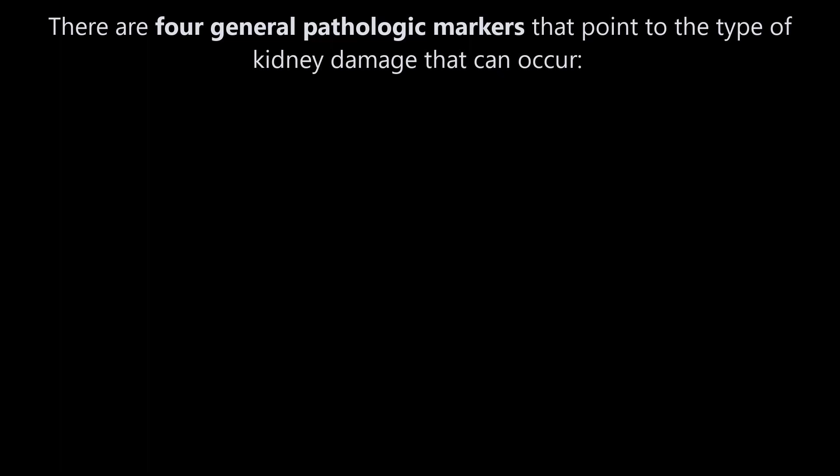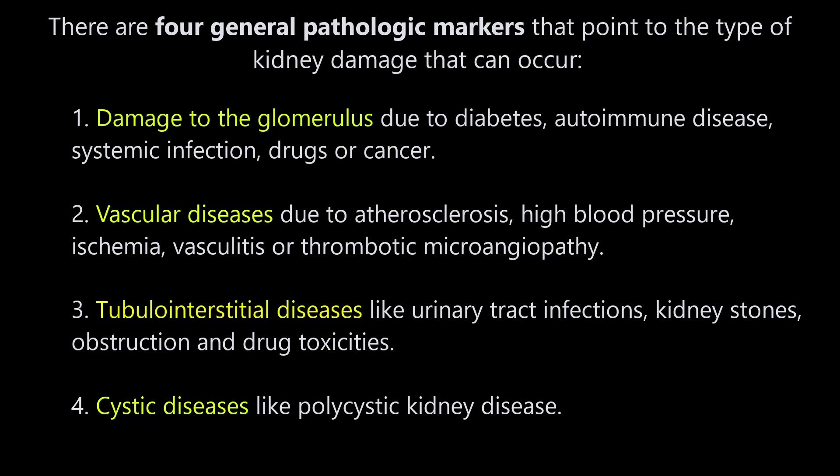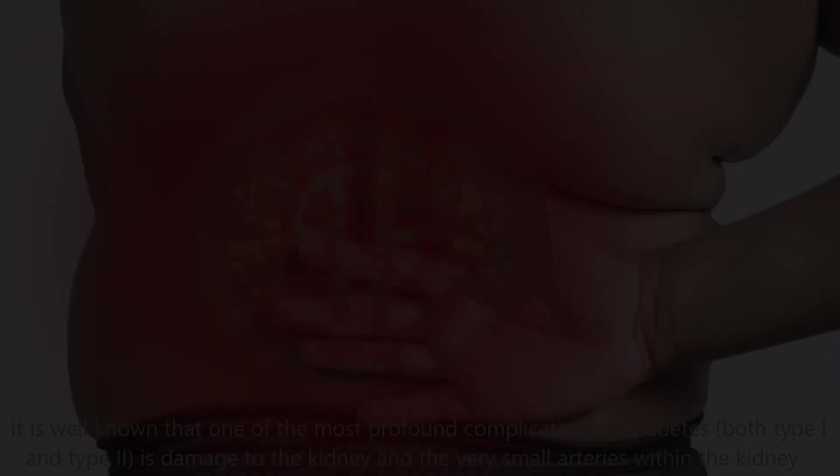There are four general pathologic markers that point to the type of kidney damage that can occur. One, damage to the glomerulus due to diabetes, autoimmune disease, systemic infection, drugs, or cancer. Two, vascular diseases due to atherosclerosis, high blood pressure, ischemia, vasculitis, or thrombotic microangiopathy, which is due to small clots in the microscopic tubules. Three, tubular interstitial disease, which occurs due to urinary tract infections, kidney stones, obstruction, and drug toxicity. And four, cystic diseases like polycystic kidney disease.